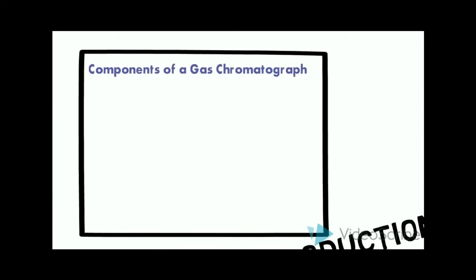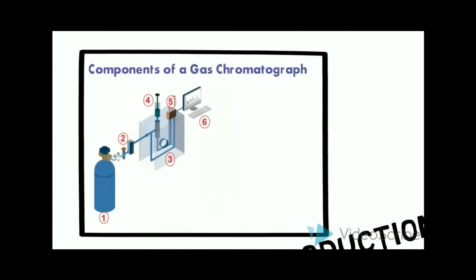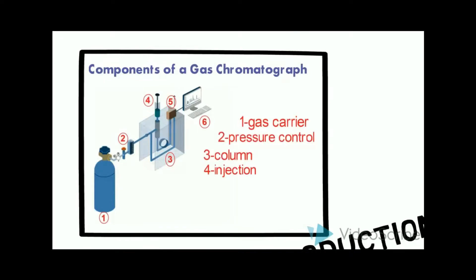The components of gas chromatography include: gas carrier, pressure control, column, injection port, detector, and data system.